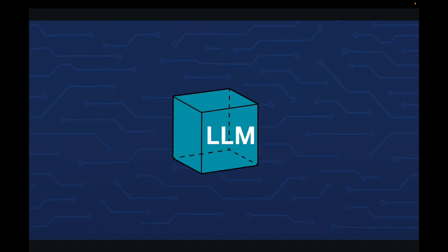Think of an LLM as a box containing billions of neural network parameters trained on massive amounts of text data. This box can understand language, generate responses, and perform various text-based tasks. But LLMs are generally considered smart — so why am I referring to it as a box? There is a reason, let me show you.